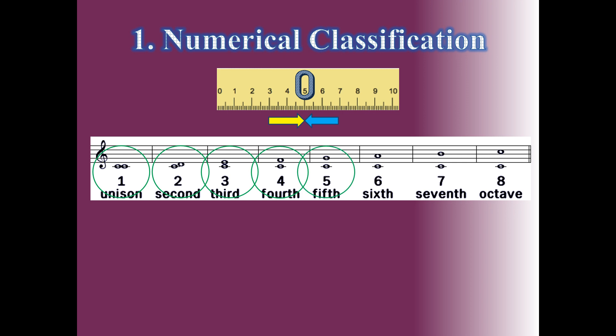DO to SOL has five tone names, so it is the fifth interval. DO to LA has six tone names, giving us the sixth interval. DO to SI has seven tone names — the seventh interval. And DO to the higher DO is the octave, which is always the eighth interval.